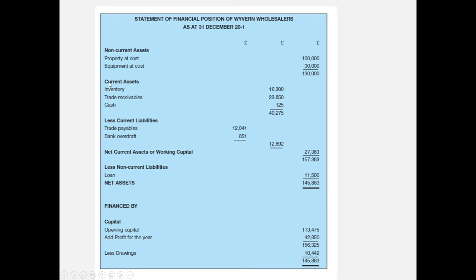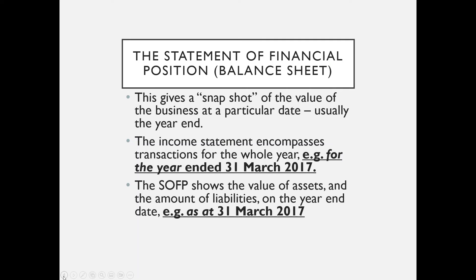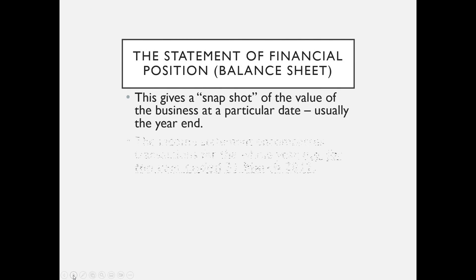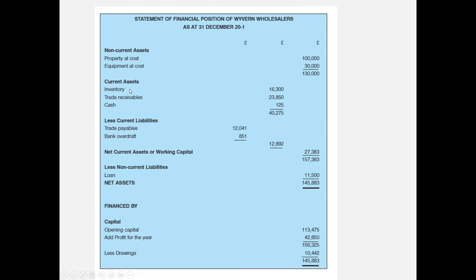Assets are stated in order of least liquidity — those furthest from being cash are listed first. Non-current assets go at the top. For current assets, we start with inventory (the closing inventory figure), then trade receivables, then bank and cash. In this example there's no positive bank balance — it's a bank overdraft, so it appears under current liabilities, not current assets.